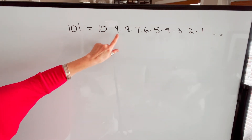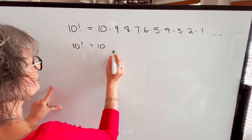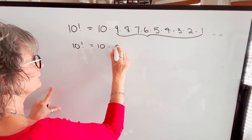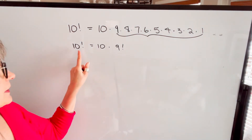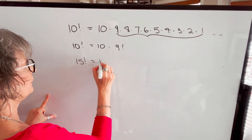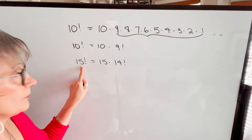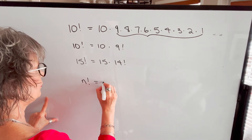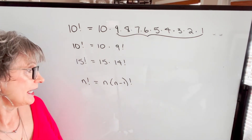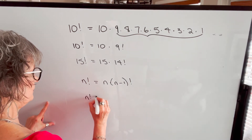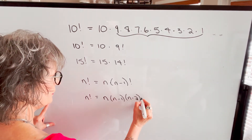Understanding this relationship: 10 factorial will be 10 times 9 and so on, and we can also write 10 factorial as 10 times 9 factorial. So 10 factorial equals 10 times 9 factorial. That works for whatever number is there — 15 factorial will be 15 times 14 factorial, and so on. To generalize for any value n, n factorial equals n times (n−1) factorial. And n factorial can also be written as n times (n−1) times (n−2) factorial.